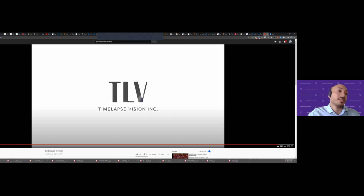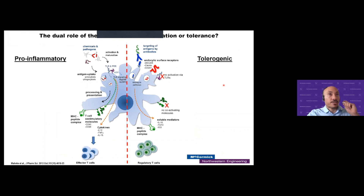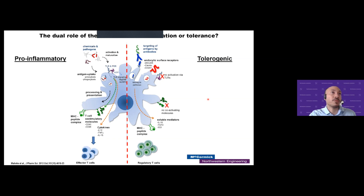It all depends on what was given to those dendritic cells — what kind of pathogens they interacted with, what kind of proteins and adjuvants they processed. Dendritic cells are not just targets for vaccination; they're targets for many different types of therapies where you want to modulate an immune response. It's very critical that we understand what we're putting in our vaccine and giving to these dendritic cells, because they will process these things and give out different kinds of immune response. If given the improper signal, they can actually have the opposite effects of what you want in terms of a vaccine.